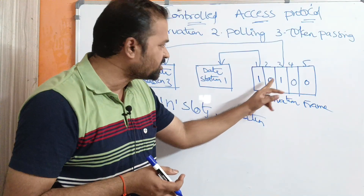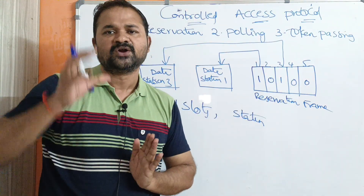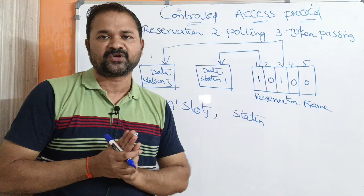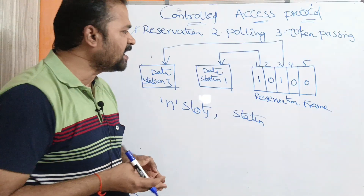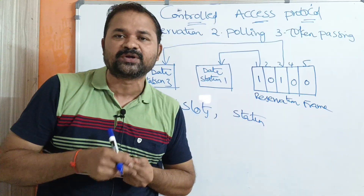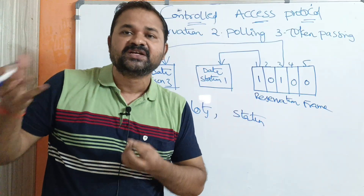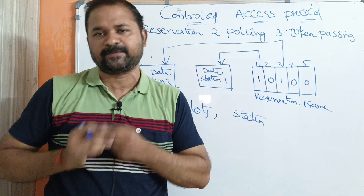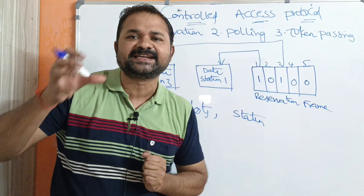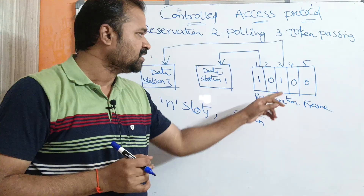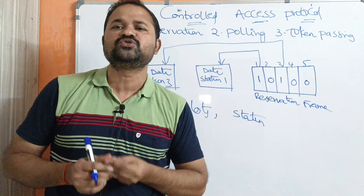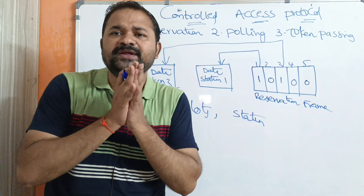Station two, station four, and station five don't want to send any frames, so those slots are zero. Each station will know information about the other stations which are interested in sending a frame. So station one knows that station three is interested to send a frame, and likewise station three knows that station one is interested to send a frame. So here we don't have any collision.